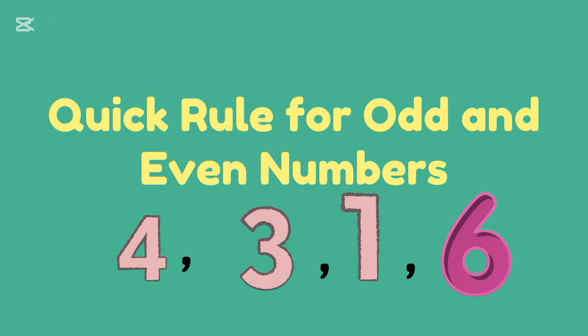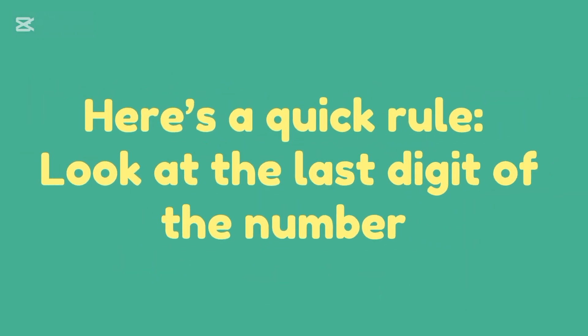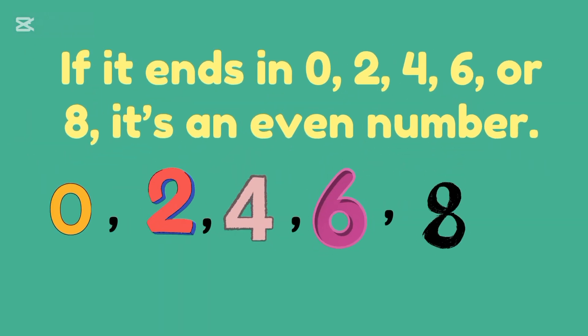Now let's learn this quick rule. Here is a quick rule. Look at the last digit of the number. If it ends in 0, 2, 4, 6, or 8, it's an even number. It's easy.